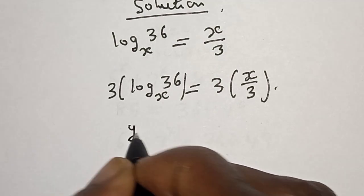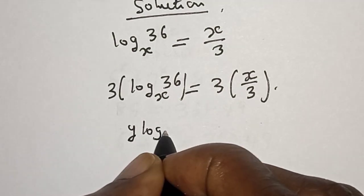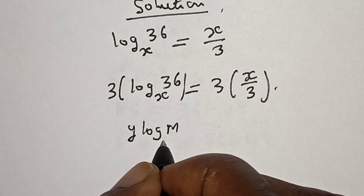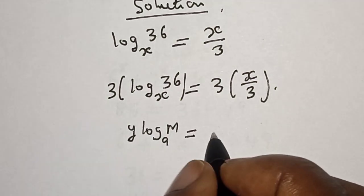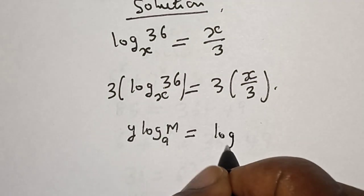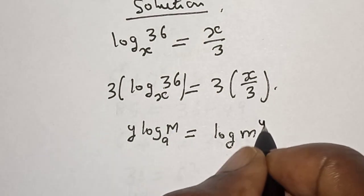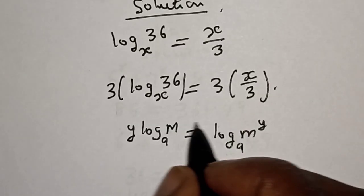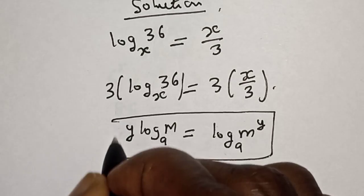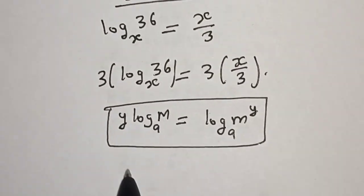Now remember this rule: if you have y log base a of m, this is equal to log base a of m raised to power y. So this becomes log base x of 36 raised to power 3 is equal to x.